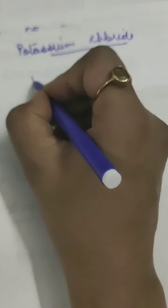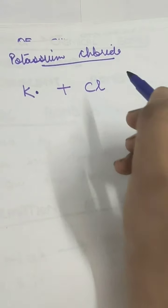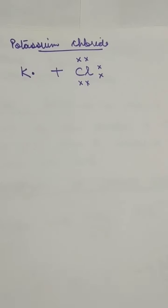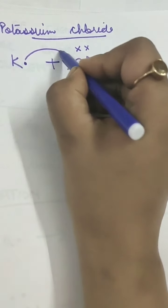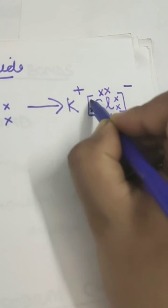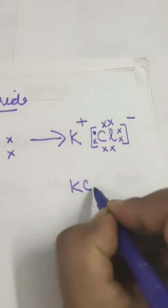Let's take potassium chloride as another example. Potassium (K) is having 1 electron and chlorine (Cl) is having 7 electrons. Potassium will donate its 1 electron to chlorine. It will become potassium ion with 1 positive charge, and chlorine will become chloride ion with the 7 electrons plus 1 dot. We can call it KCl - it is a new ionic compound.